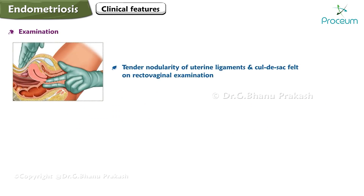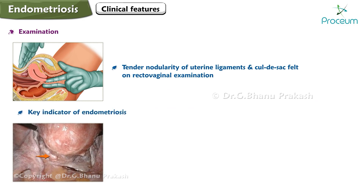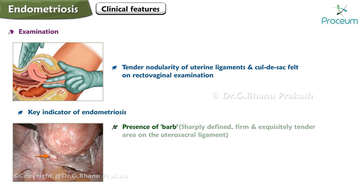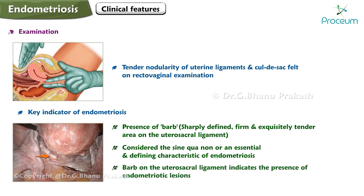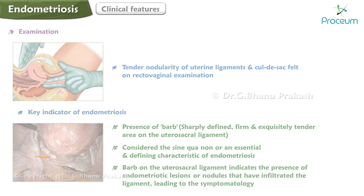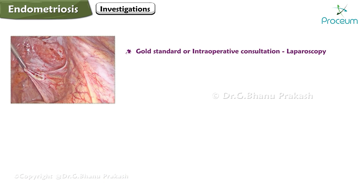On examination, tender nodularity of the uterine ligaments and cul-de-sac is felt on rectovaginal examination. A key indicator is the presence of a 'barb' — a sharply defined, firm, and exquisitely tender area on the uterosacral ligament. This distinctive feature is considered the sine qua non of endometriosis, indicating endometriotic lesions or nodules that have infiltrated the ligament.